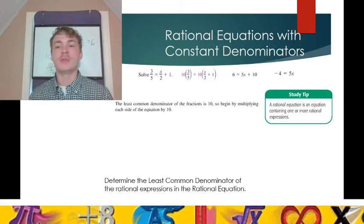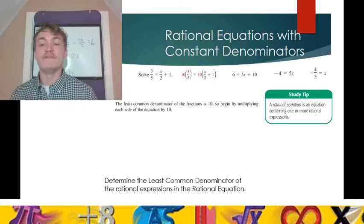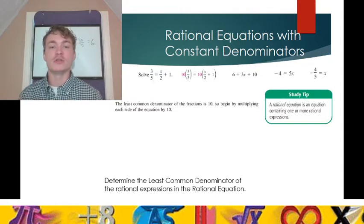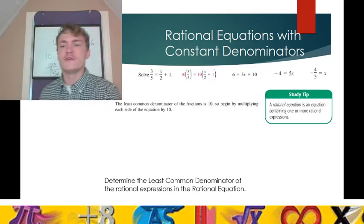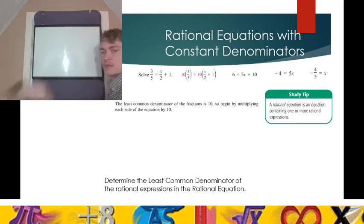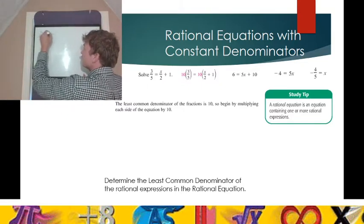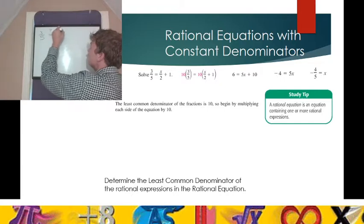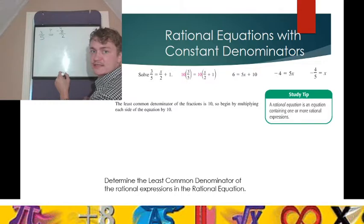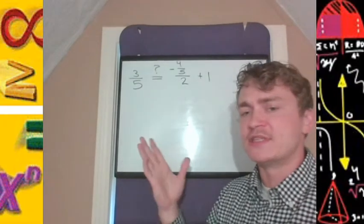Our solution for x is negative 4/5. To confirm, let's plug negative 4/5 back in for x. Taking our solution for the original equation, we want to know: does 3/5 actually equal x over 2 plus 1 where x is negative 4/5 — that is, negative 4/5 divided by 2, plus 1? We are checking to see if this solution is correct.